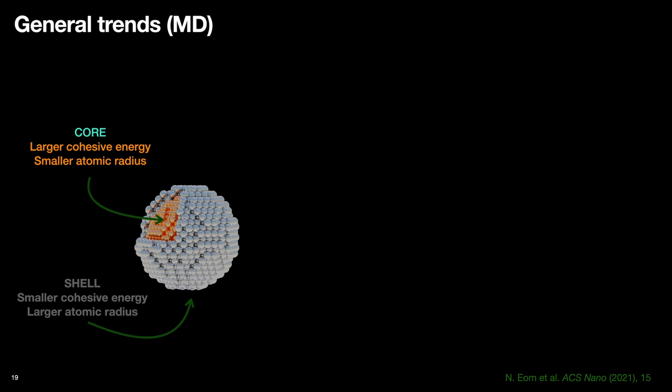The first general trend we see from the analysis agrees well with the previous studies, that for a given combination, the material with larger cohesive energy and smaller atomic radius tends to occupy the core, and the other occupies the surface.